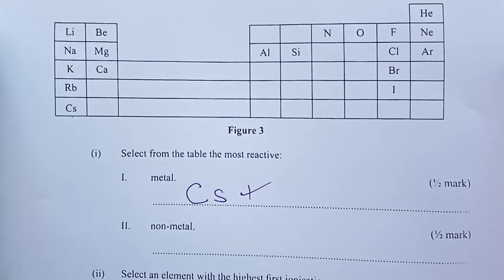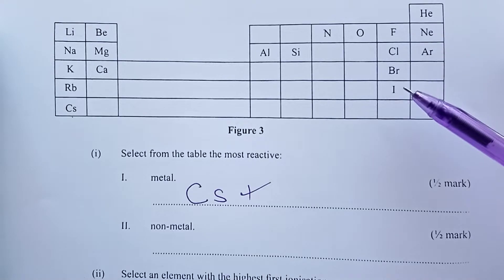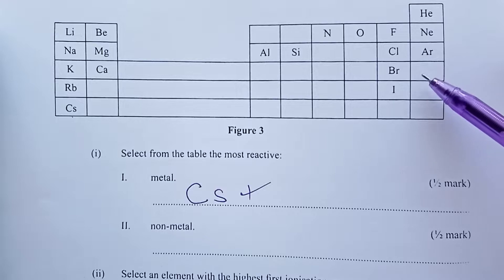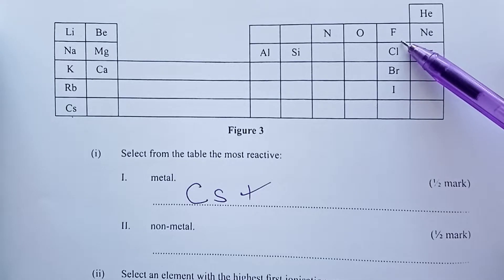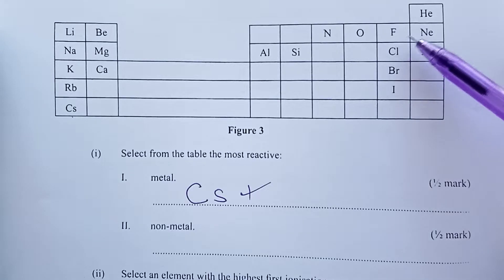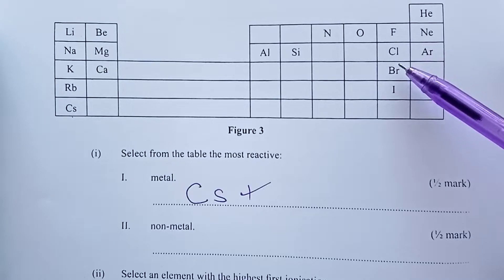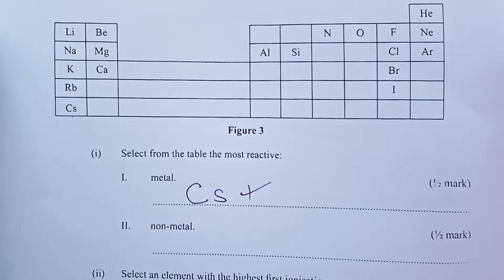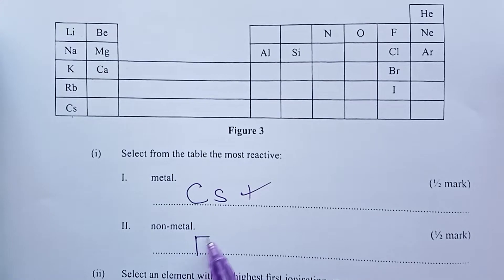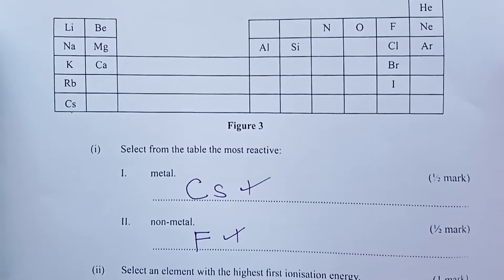For the most reactive non-metal, we look at halogens, because group 8 elements are generally not reactive. For non-metals, the smaller the atomic radius, the more reactive the non-metal is. The reasoning is that they react by gaining extra electrons. So the answer becomes fluorine (F).